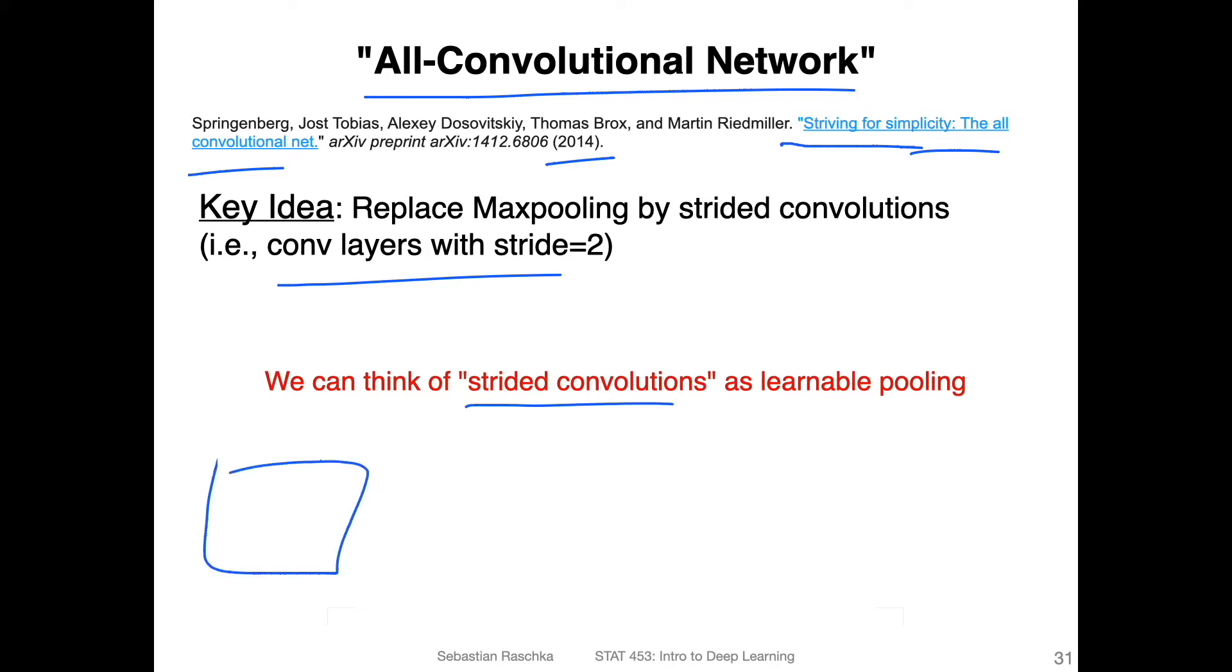So in a traditional convolutional network, we have usually a convolution layer with stride equals one, and then we have max pooling, usually two-by-two max pooling also with a stride of two. And then we have a convolutional layer again with stride of one and we continue like that. Usually the convolutional layers preserve the size because we have a stride of one, and the max pooling will reduce the size twofold. It will halve the size if we have a two-by-two max pooling with a stride of two.